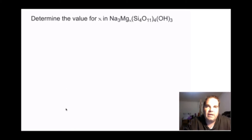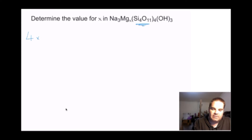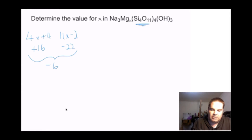Here we need to determine x in Na3MgxSi4O11(4)(OH)3. First, the silicate Si4O11: 4 silicons at plus 4 equals plus 16, and 11 oxygens at minus 2 equals minus 22. Plus 16 minus 22 gives a minus 6 charge, so these silicates are minus 6.